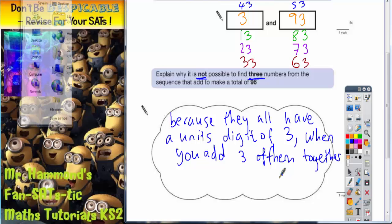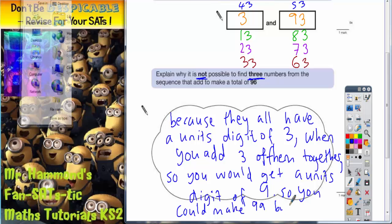3 lots of a unit's digit of 3 would actually make 9. So you would get a unit's digit of 9. So you could make 99 but not 96. And that's all you need to say.